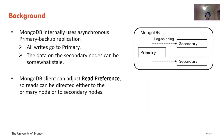Now let's start with the background. MongoDB internally uses a synchronized primary-backup replication. In this setting, all write requests go to the primary copy, and those updates are then sent to the secondary copies by log shipping. This means the data on the secondary nodes can be somewhat stale. In MongoDB, there is a tuning knob called read preference, and reads can be directed to either the primary node or the secondary node. Let's consider when it is more reasonable to send reading requests to the primary copy versus the secondary copies.